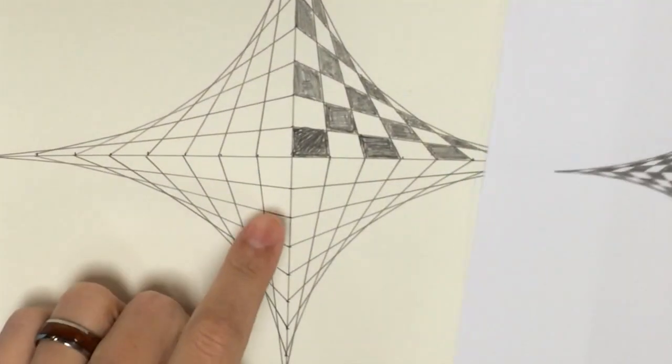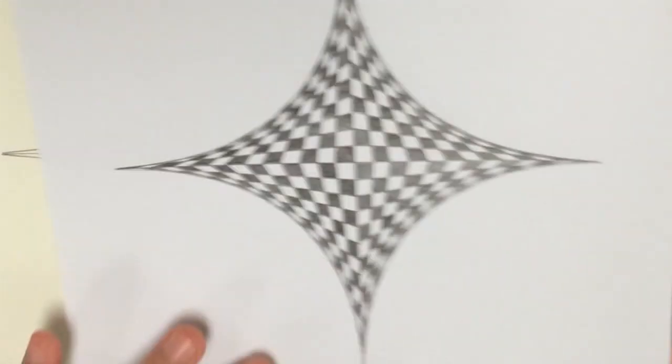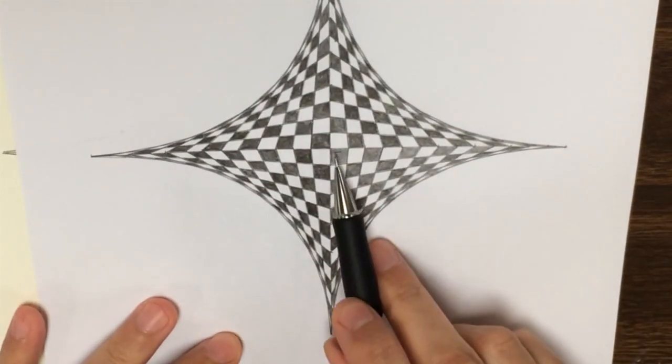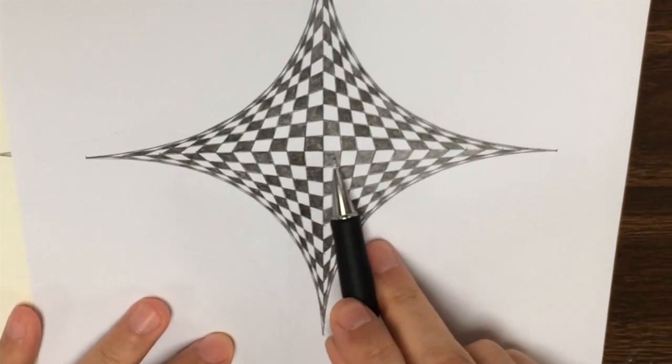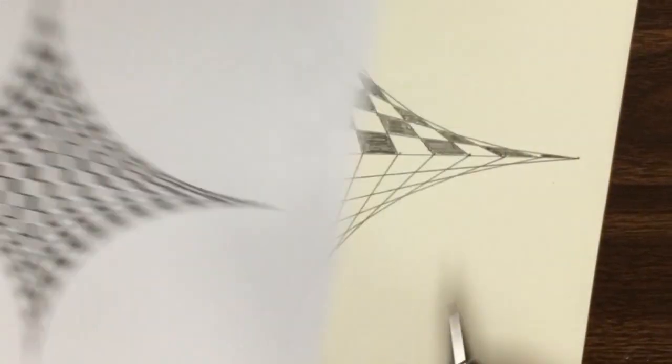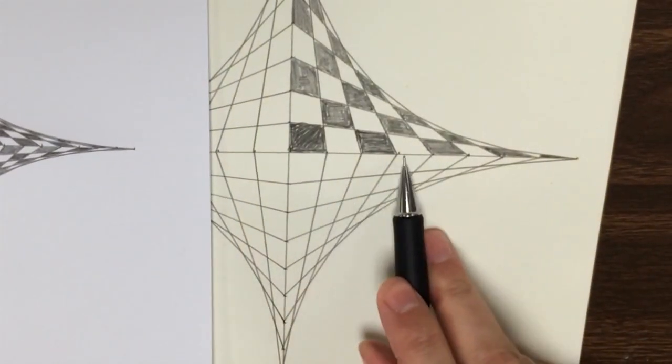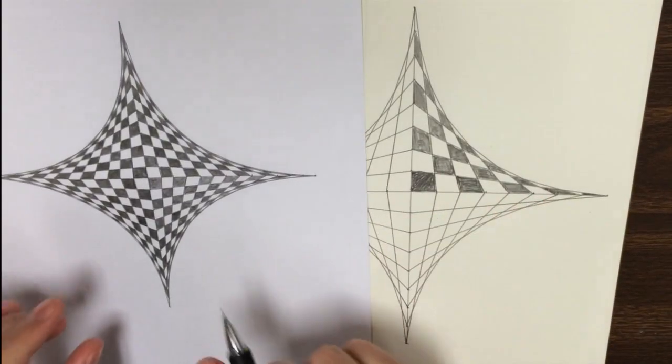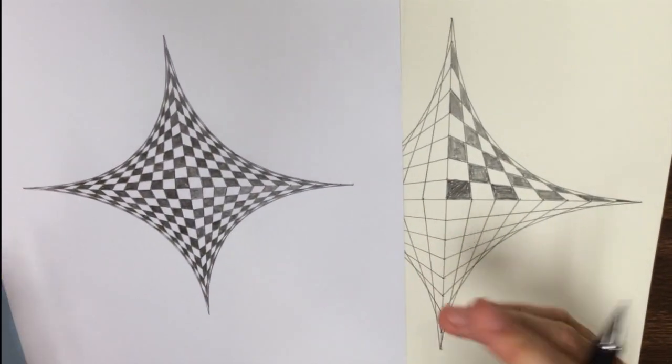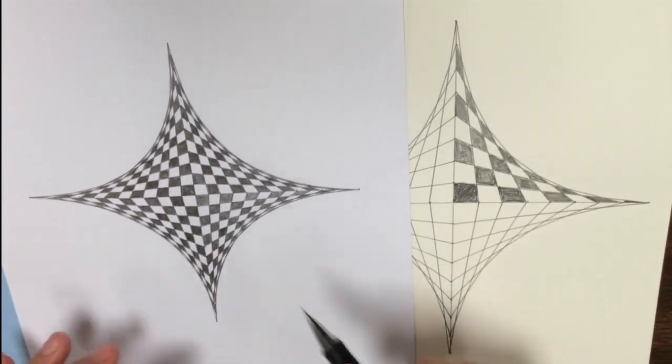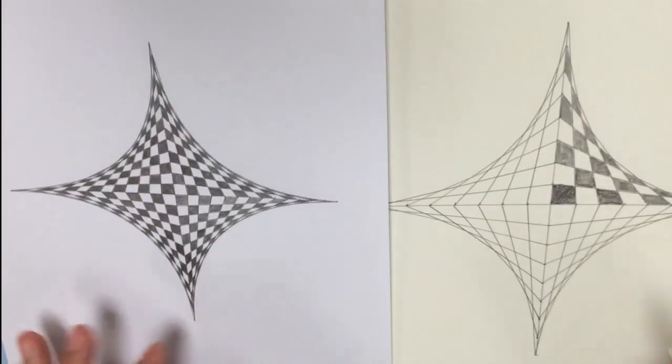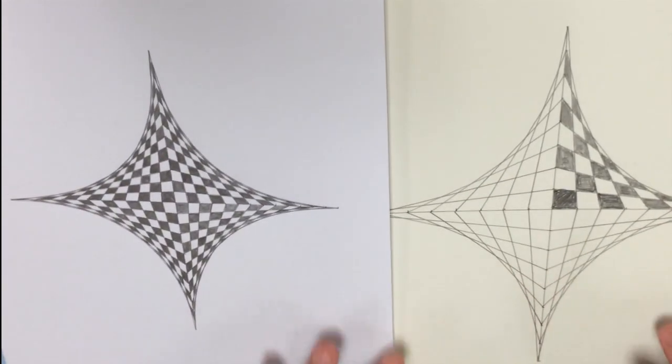Now, the difference between this one that I just did and the one that I did earlier is that my increments are much shorter. I did this one in quarter inch increments and this one I did in half inch increments. So, the smaller increments that you make it, obviously, the more lines and the more blocks you're going to have to color. And it also makes your pattern a lot tighter and a lot smaller.